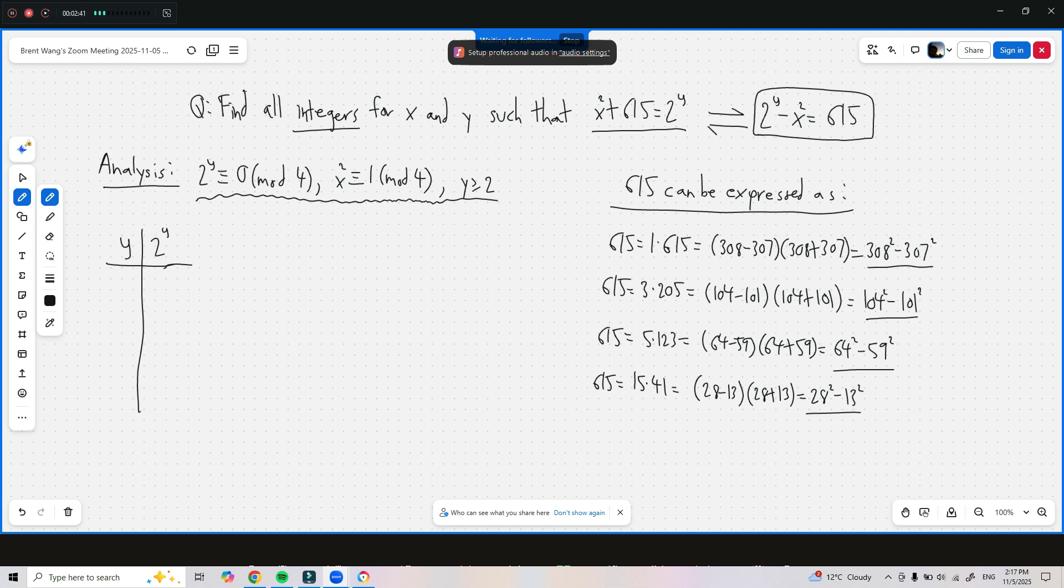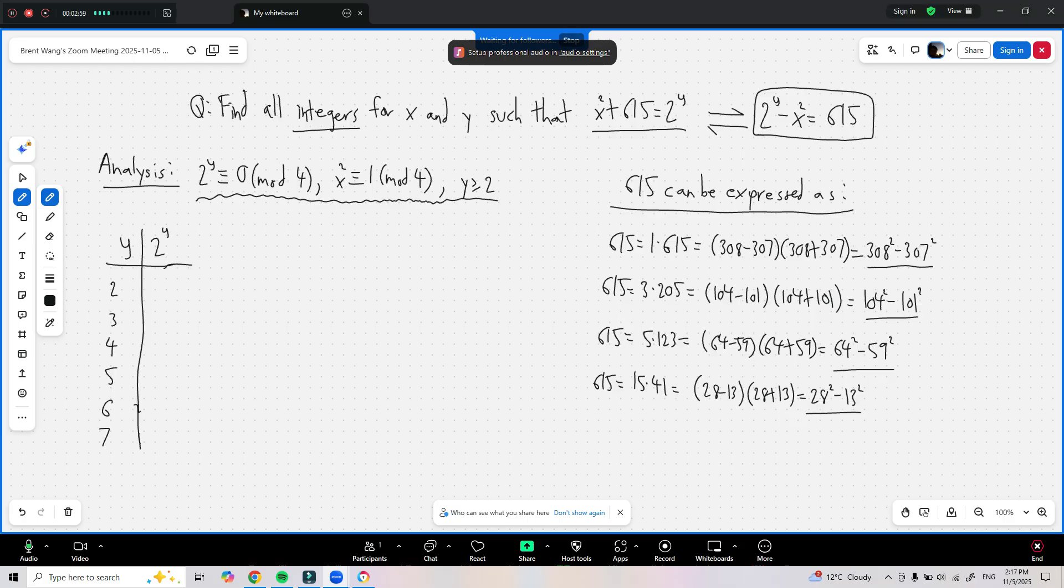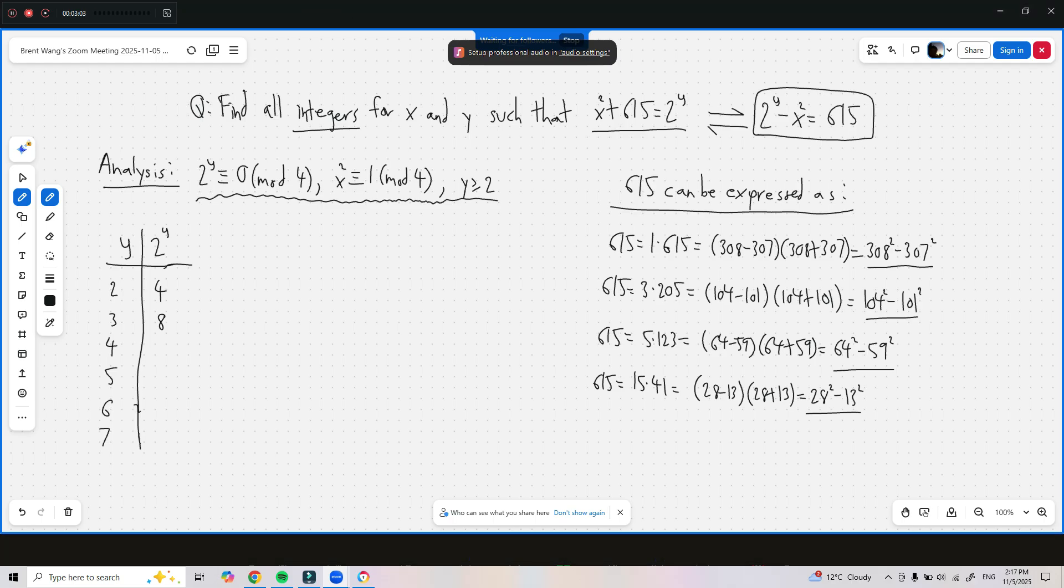So when y is equal to 2, 3, 4, 5, 6, 7, so on and so forth. So 2 to the power of 2 is equal to 4, 2 to the power of 3 is equal to 8, 2 to the power of 4 is equal to 16, 2 to the power of 5 is equal to 32, to the power of 6 is 64, and to the 7 is 128. You can go on and on as much as you want.